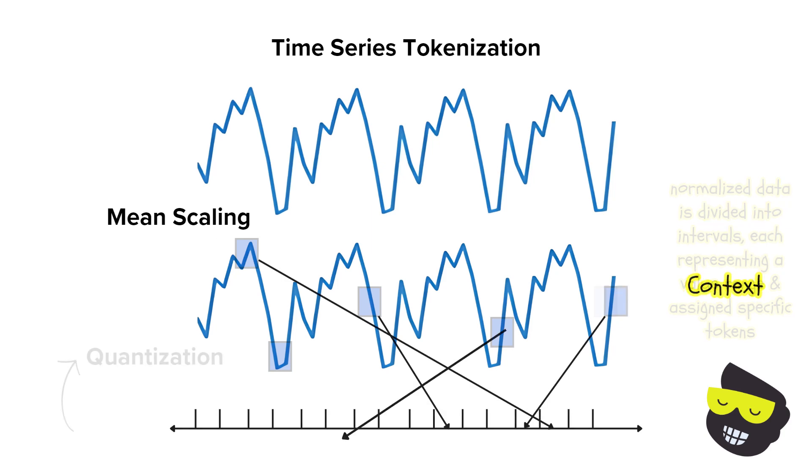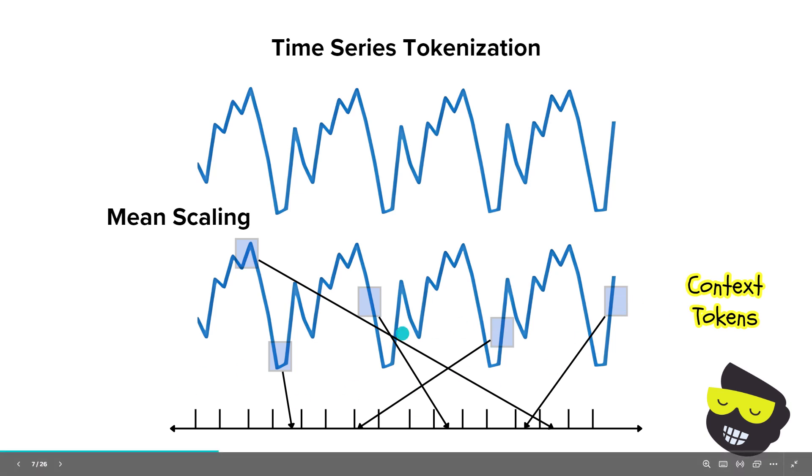Then we have context tokens. So these tokens represent the historical data and serve as the input for the model. The scale in the bottom part of the diagram represents the quantized ranges of the normalized time series data. Each range is assigned a unique token, which the model uses to capture the overall patterns and trends. And this will lead to a better forecasting accuracy.